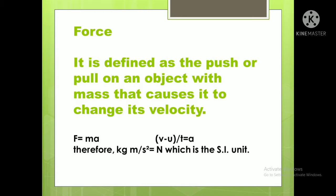How much acceleration will be there from initial to final point — how much velocity is there? F is equal to MA, where F stands for force, M is mass, and A is acceleration. We already know acceleration is final velocity minus initial velocity divided by time, that is V minus U by T. So M into A is the force — this is the derivation of force. Its SI unit: mass is kg and acceleration is meter per second squared, so kg·m/s² equals Newton. Therefore, the SI unit of force is Newton.